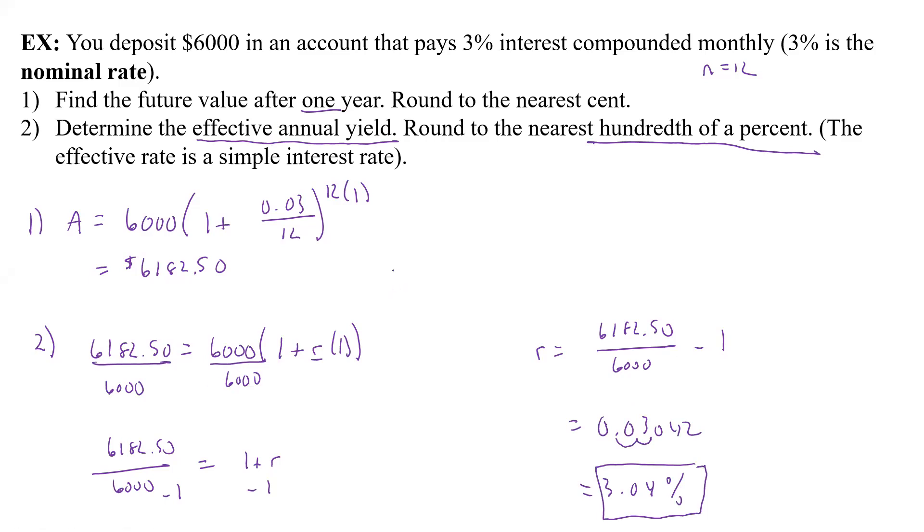And again, all we did was on this one we did the compound formula, A equals P times 1 plus R over N to the Nt. This one we did A equals P times 1 plus Rt. The t in this case is 1. P we already know, A we already know, and so we solved it down and got that. Those are the two formulas we used to get it. On this one we had to actually solve for the r.